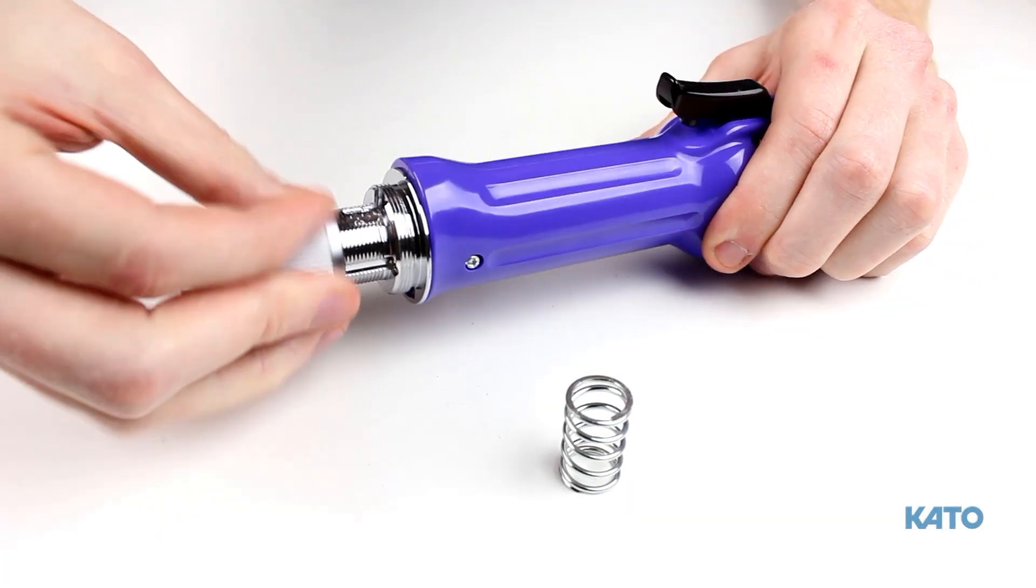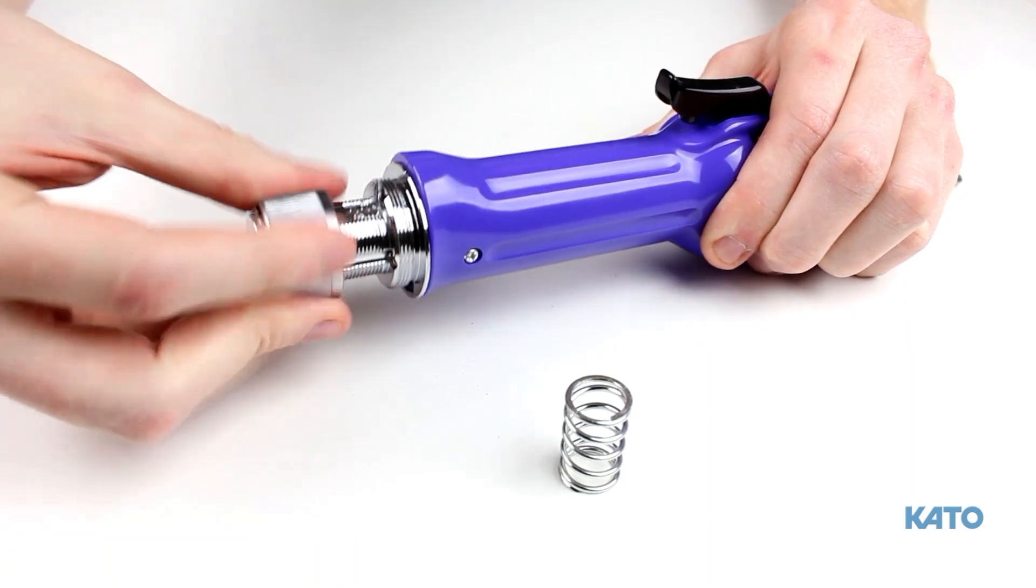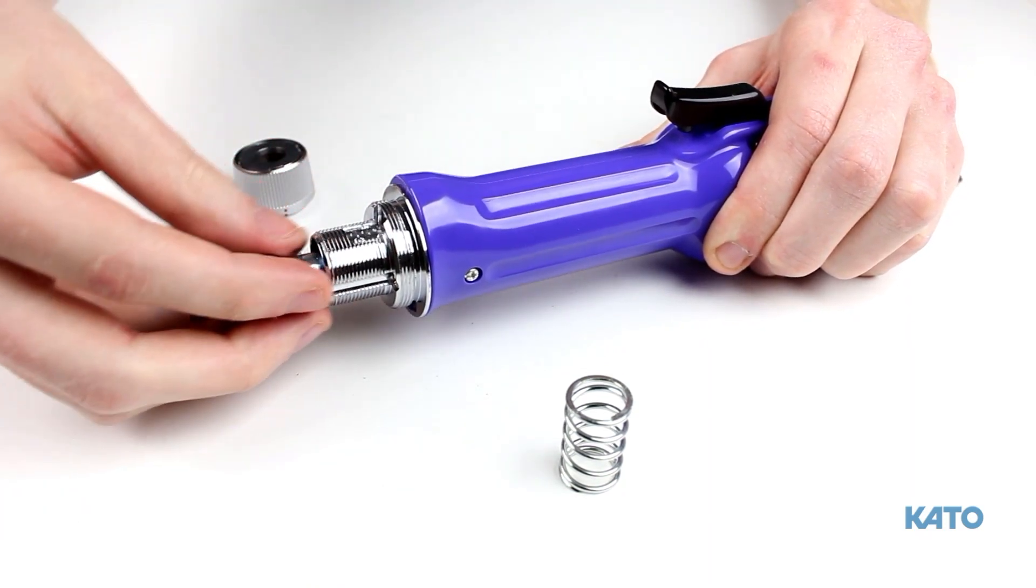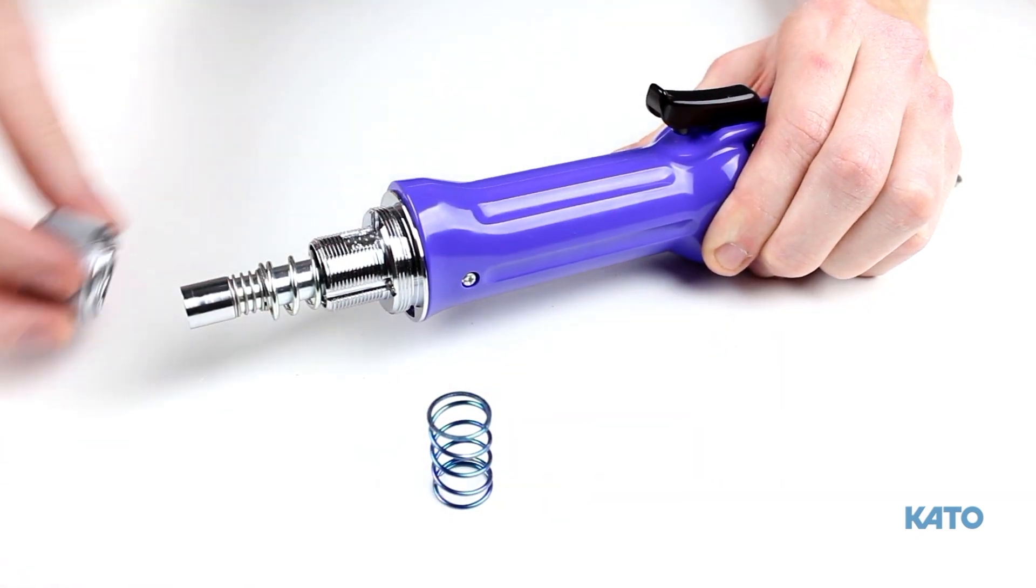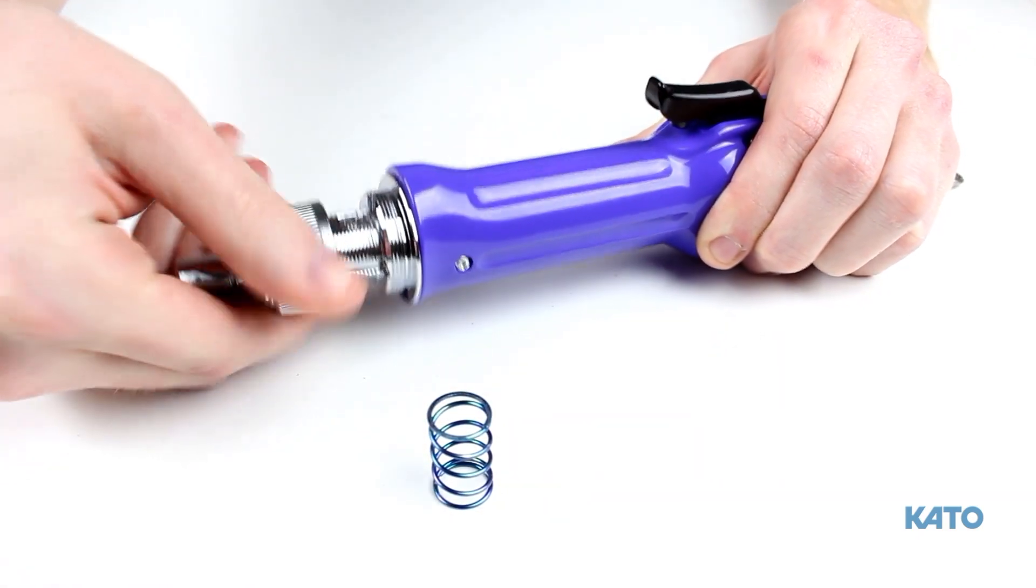To install the appropriate spring, remove the torque-adjusting nut by turning it counter-clockwise. Slide the appropriate spring over the quick-disconnect sleeve and reconnect the torque-adjusting nut.